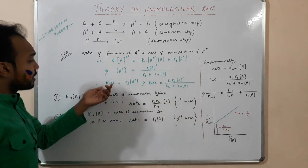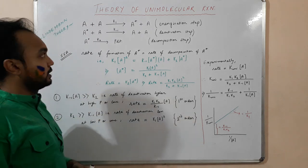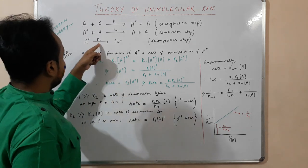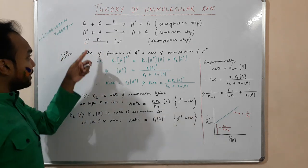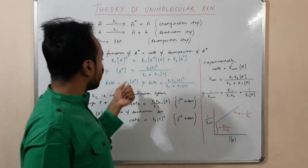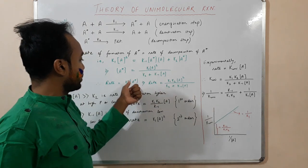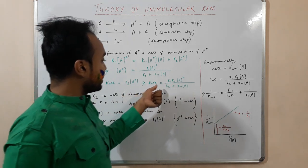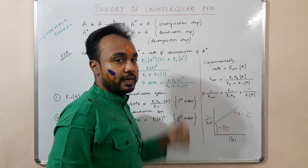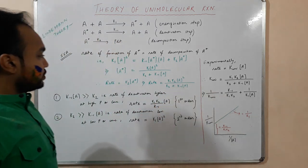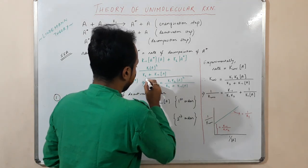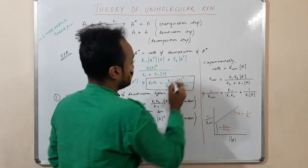The rate of product formation is K₂[A*]. Substituting the value of A* gives us the rate equal to K₁K₂[A]² divided by (K₂ + K₋₁[A]). This is an important formula that you need to memorize.